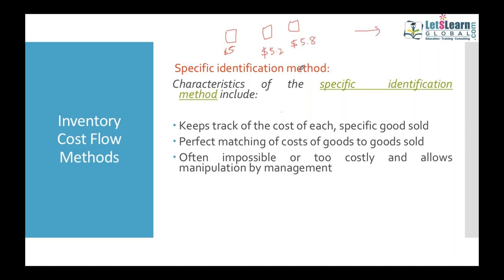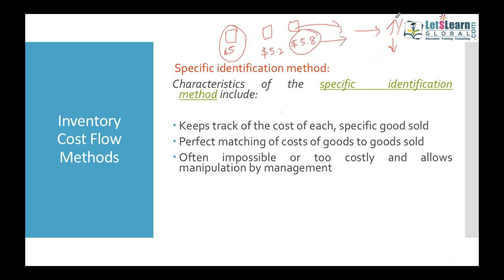There is no specific calculation for this method — you decide which material to issue based on market conditions, which affects cost of goods sold in production. The average cost method does not consider specific rules for inventory movement. We simply mix all inventory, calculate the average price, and issue material to production at that average price, without following any particular sequence.